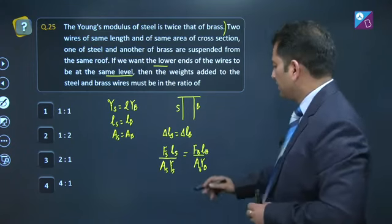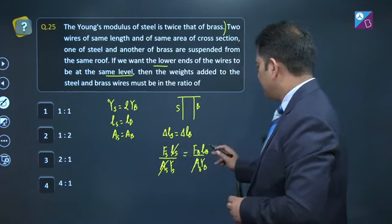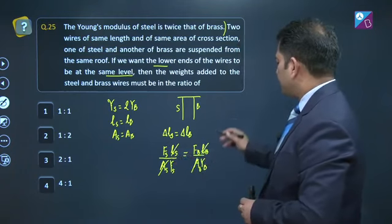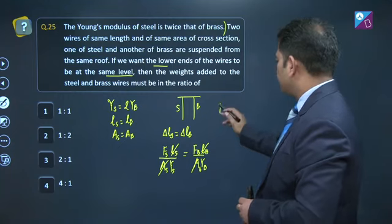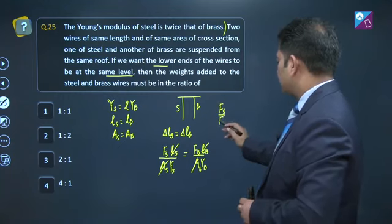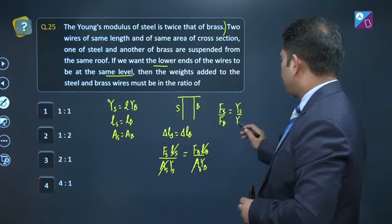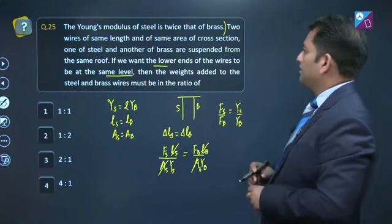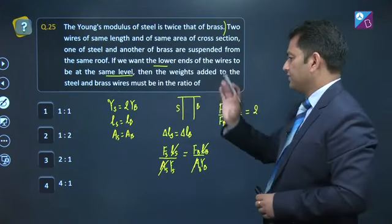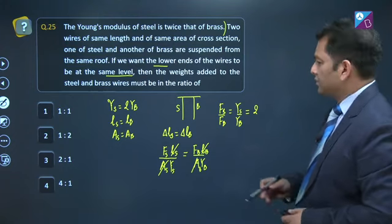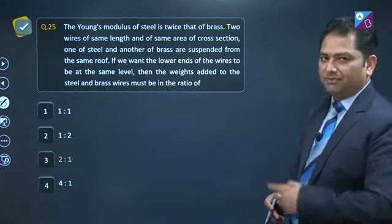Ab zara dhyan se dekho, cross section area same hai, aur length ye bhi same hai. That means, we have to calculate fs by fb, which will be equals to ys by yb, isn't it? And ys or yb ka ratio that is there, 2 is to 1 hai, that is very much clearly given. So force ka ratio bhi 2 is to 1, yahan ki option number 3.